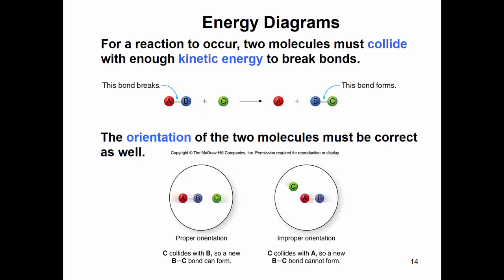For a reaction to occur, two molecules must collide with enough kinetic energy to break bonds. For a reaction to occur we have to break reactant bonds and form new products. Not only that, but our molecules have to collide in a way that's the proper orientation.